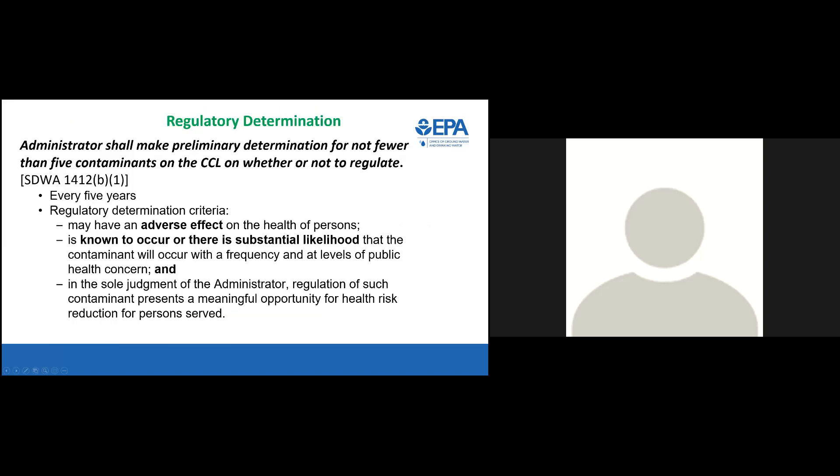Moving forward — from the UCMR database dataset, EPA makes regulatory determinations. Every five years, there's a five-year cycle from the contaminant candidate list, unregulated contaminant monitoring, and then a regulatory determination. The criteria we use: one, the contaminant may have an adverse effect on the health of persons; two, it's known to occur, or there is substantial likelihood it will occur in public water systems at a frequency and level of concern; and three, in the sole judgment of the administrator, regulating this contaminant would present a meaningful opportunity for health risk reduction.